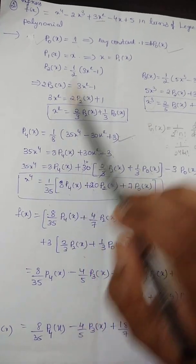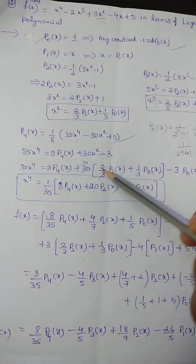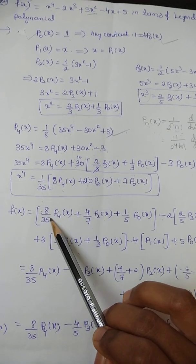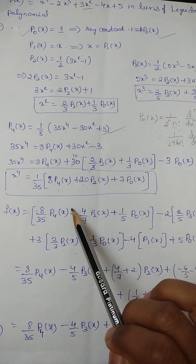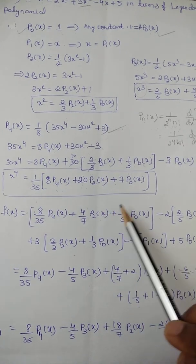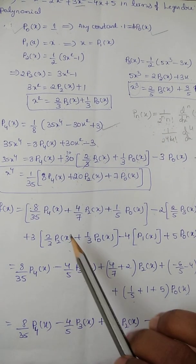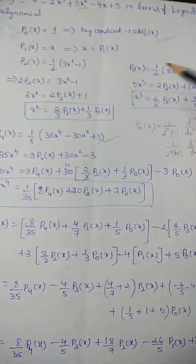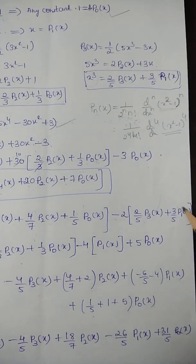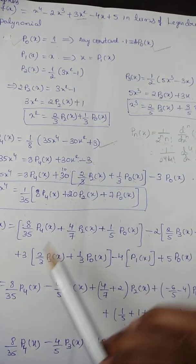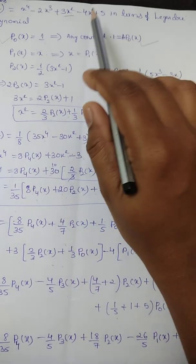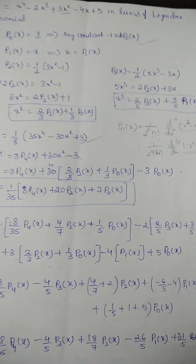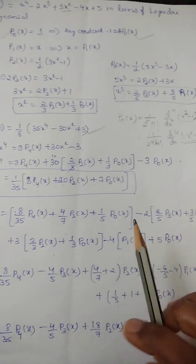Now substitute into f(x): f(x) = x⁴ - 2x³ + 3x² - 4x + 5. Replace x⁴ with (8/35)P₄(x) + (4/7)P₂(x) + (1/5)P₀(x); x³ with (2/5)P₃(x) + (3/5)P₁(x); x² with (2/3)P₂(x) + (1/3)P₀(x); x with P₁(x); and the constant 5 with 5P₀(x).